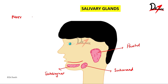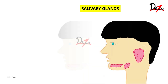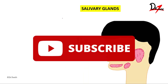The minor salivary glands are approximately 600 to 1000 in number. They are extremely small and can be located near the lingual mucosa, the buccal mucosa, the palatal mucosa, or the labial mucosa.